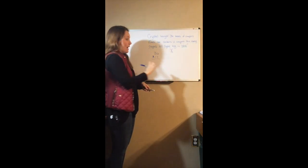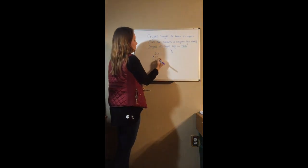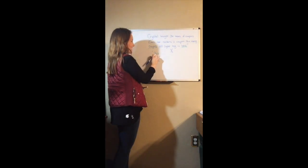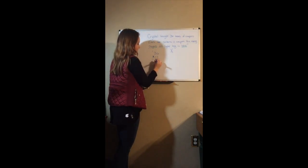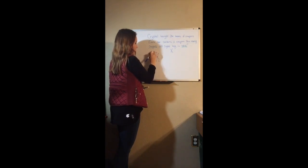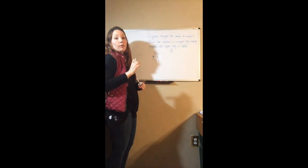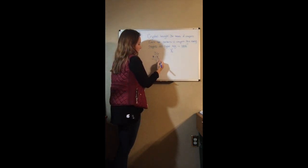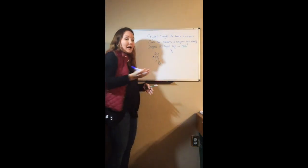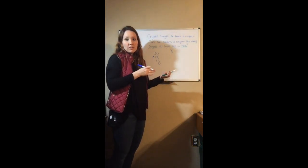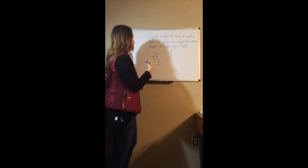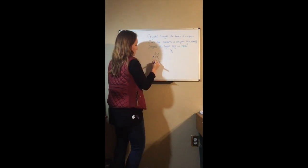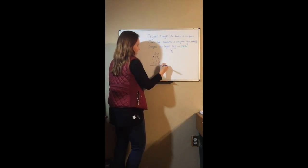So we have 6 times 2 which gives us 12, carry my 1; 2 times 3 is 6 plus 1 is 7. Done with that 2, erase what I carried. Drop down a line and add a 0 — look back at your notes from the multiplication section if you need a reminder. 1 times 6 is 6, 1 times 3 is 3. Add those all together and we get 432 crayons.